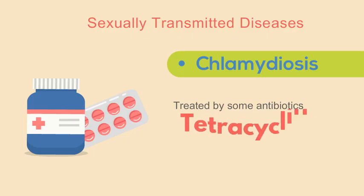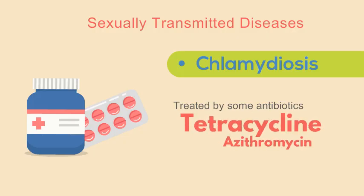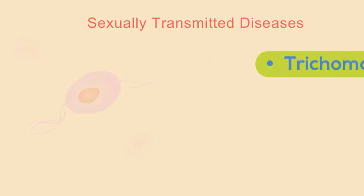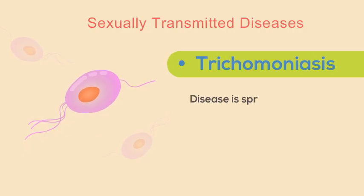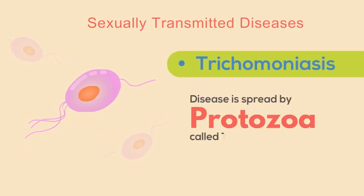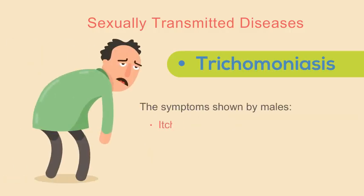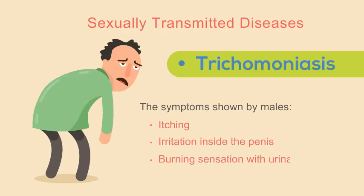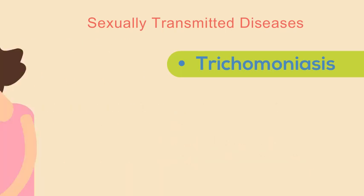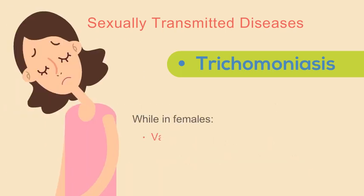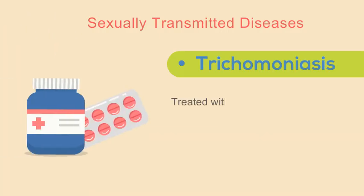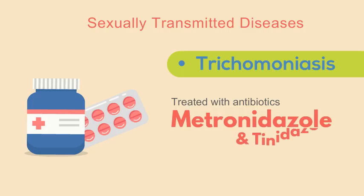Chlamydiosis can be treated by antibiotics such as tetracycline and azithromycin. The third disease is trichomoniasis, spread by the protozoa Trichomonas vaginalis. Symptoms in males include itching, irritation inside the penis, and burning sensation with urination, while in females vaginal discharge with a fishy smell is the main symptom. It can be treated with antibiotics such as metronidazole and tinidazole.